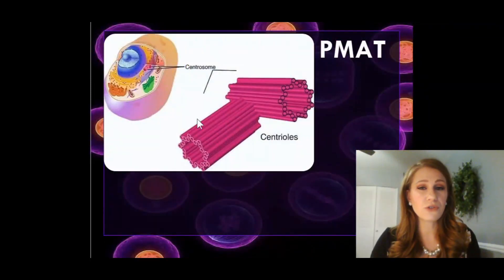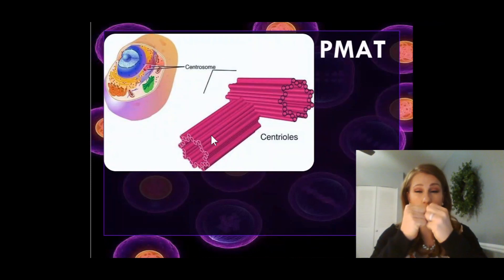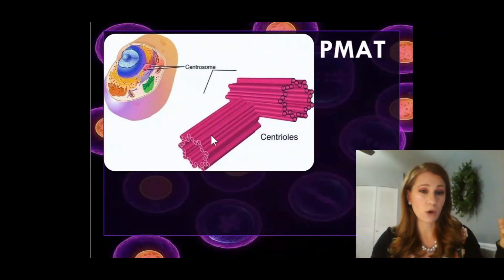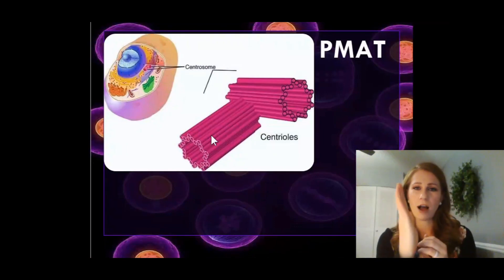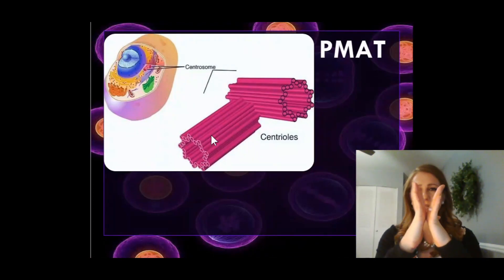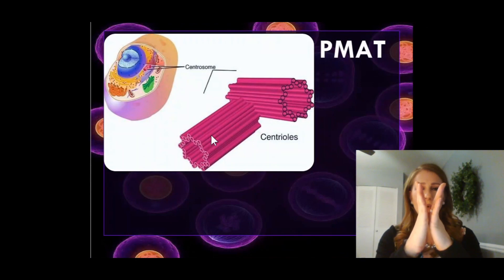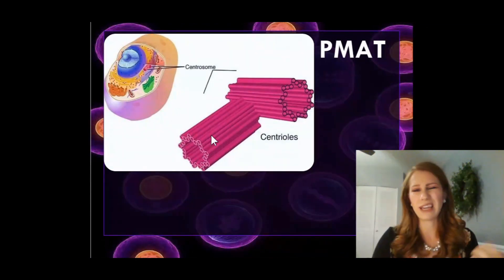Those centrioles create spindle fibers, and spindle fibers are what pull your different chromosomes or chromatids to opposite parts of the cell. We know we have a copy of our DNA from interphase, and in S phase we make a second copy — giving us that nice X shape. We have to separate those in mitosis, so they get pulled apart by spindle fibers made by centrioles, giving us two separate copies of DNA.